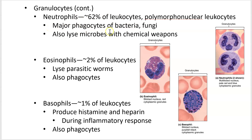Neutrophils are the major phagocytes in your bloodstream. They'll eat anything that shouldn't be there, and they also produce chemicals that puncture the cell membranes of pathogenic things and destroy them that way.